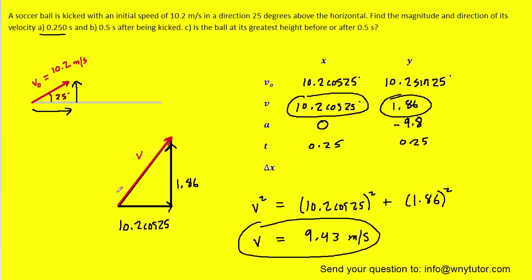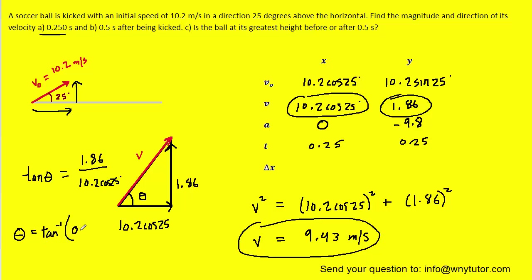For the direction, we look for the angle using the tangent function: tangent of that angle equals the opposite side of 1.86 over the adjacent side of 10.2 cos 25. To get the angle, we take the inverse tangent of that fraction, which is the inverse tangent of approximately 0.2, giving us roughly 11.4 degrees. So part A is now solved.